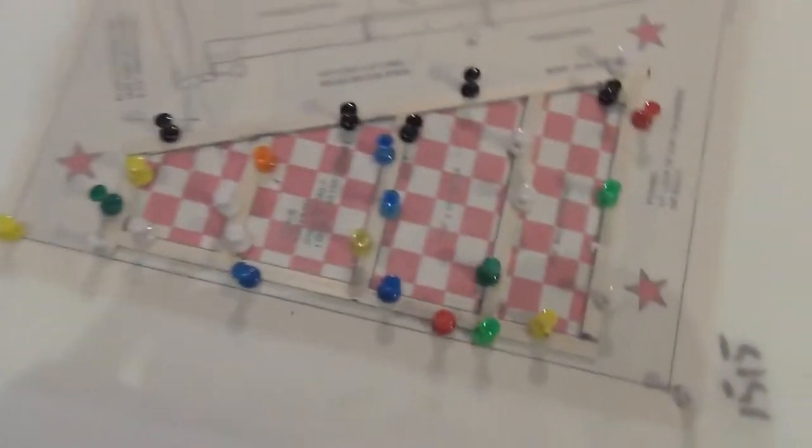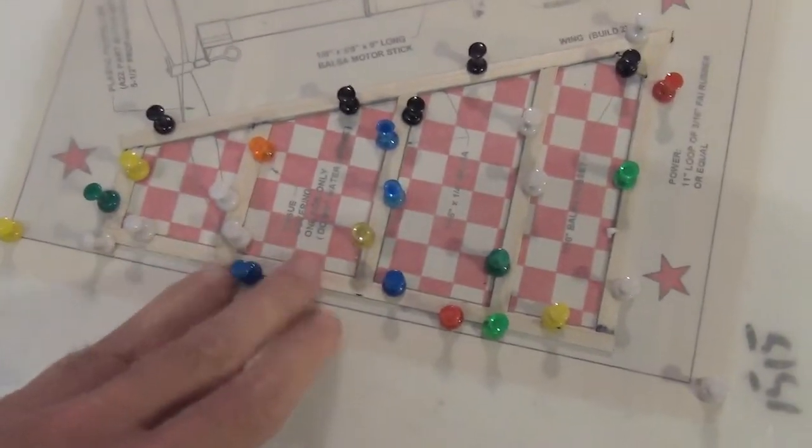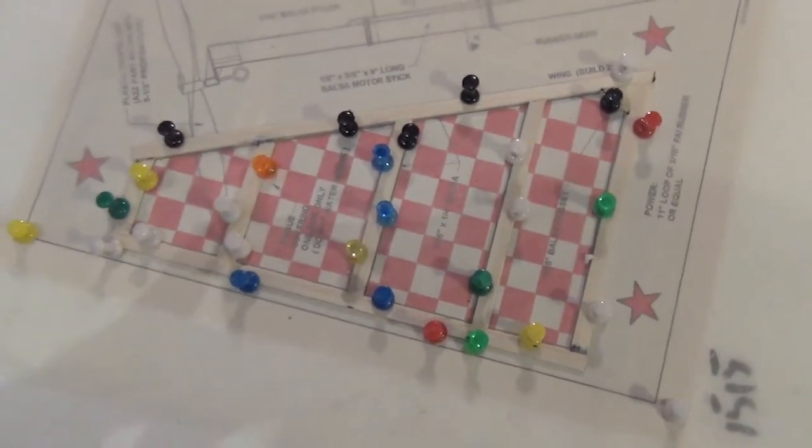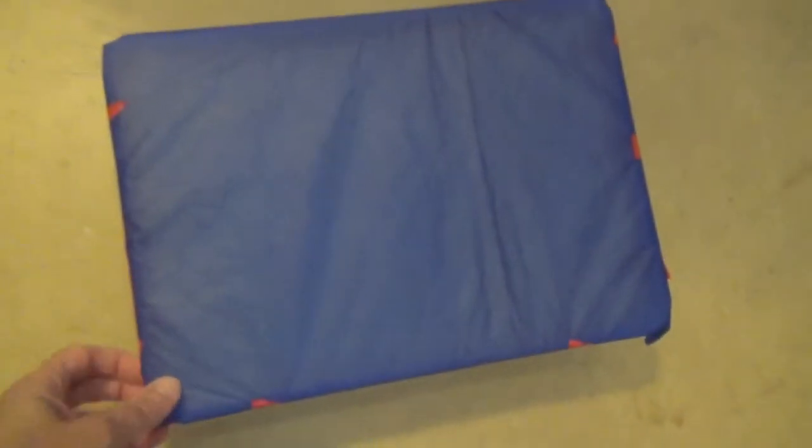You'll notice there's only one wing half, so I have to make another one on top of this one to make sure they're both the same. Standard procedure, which I'm now going to do.